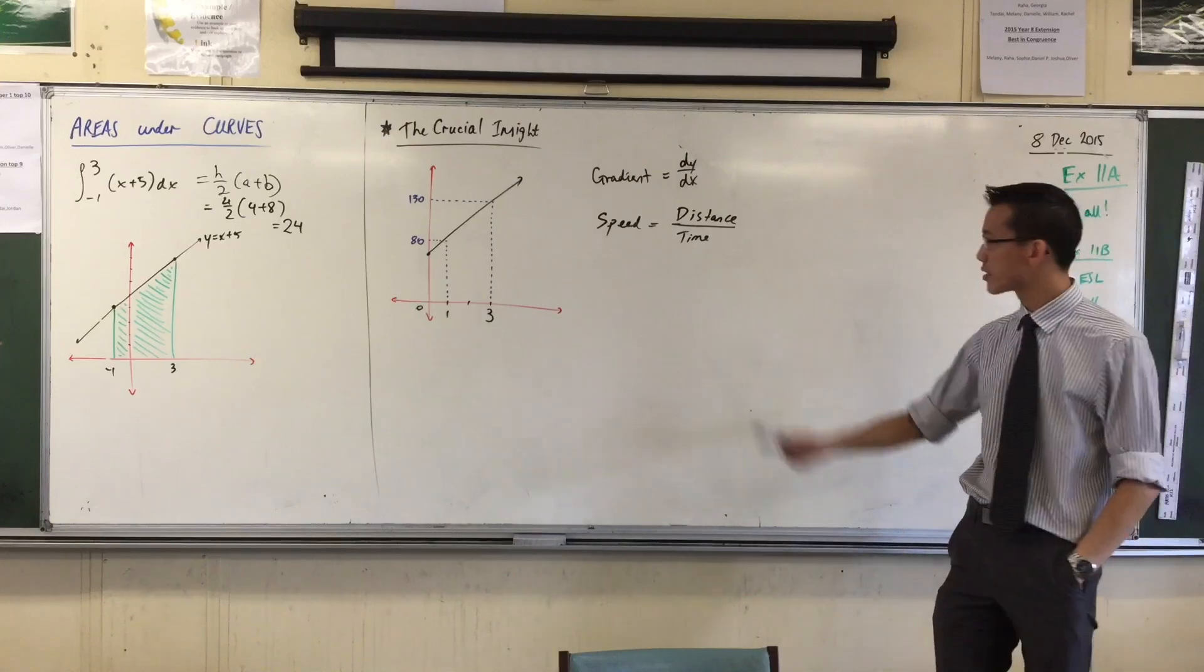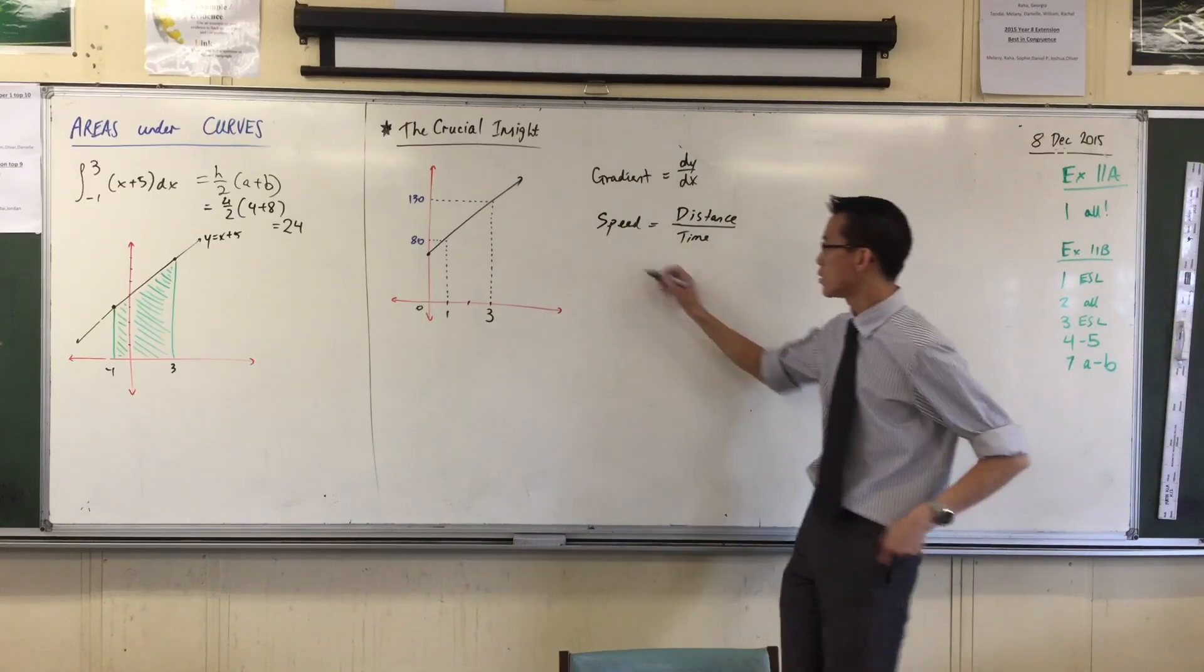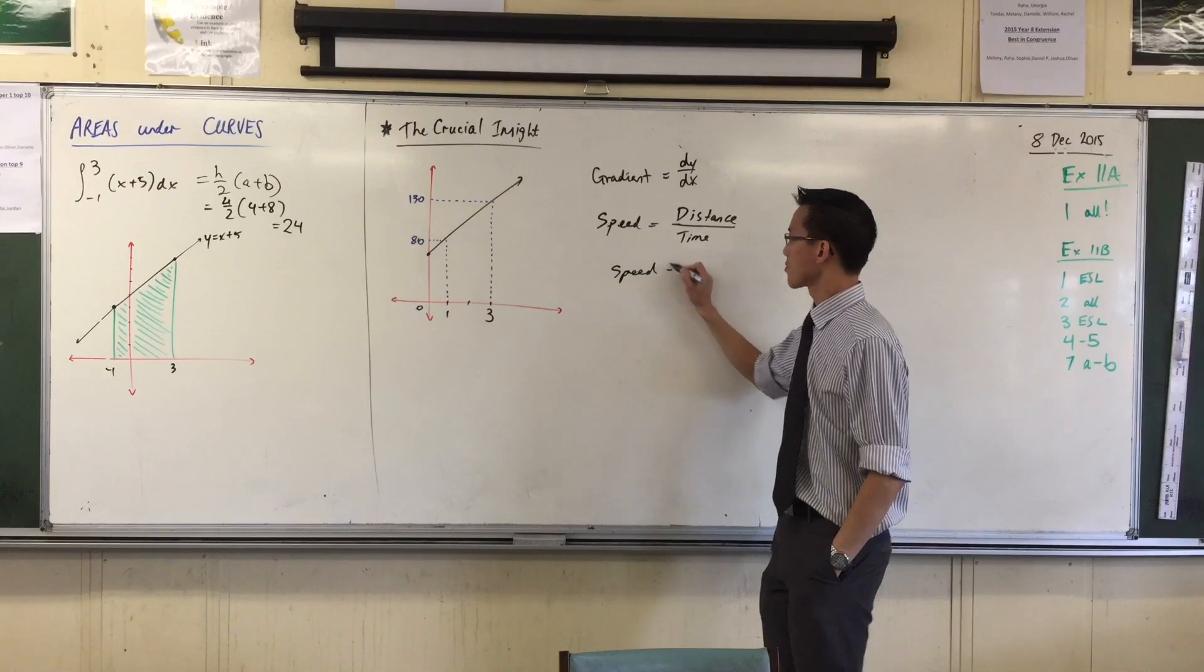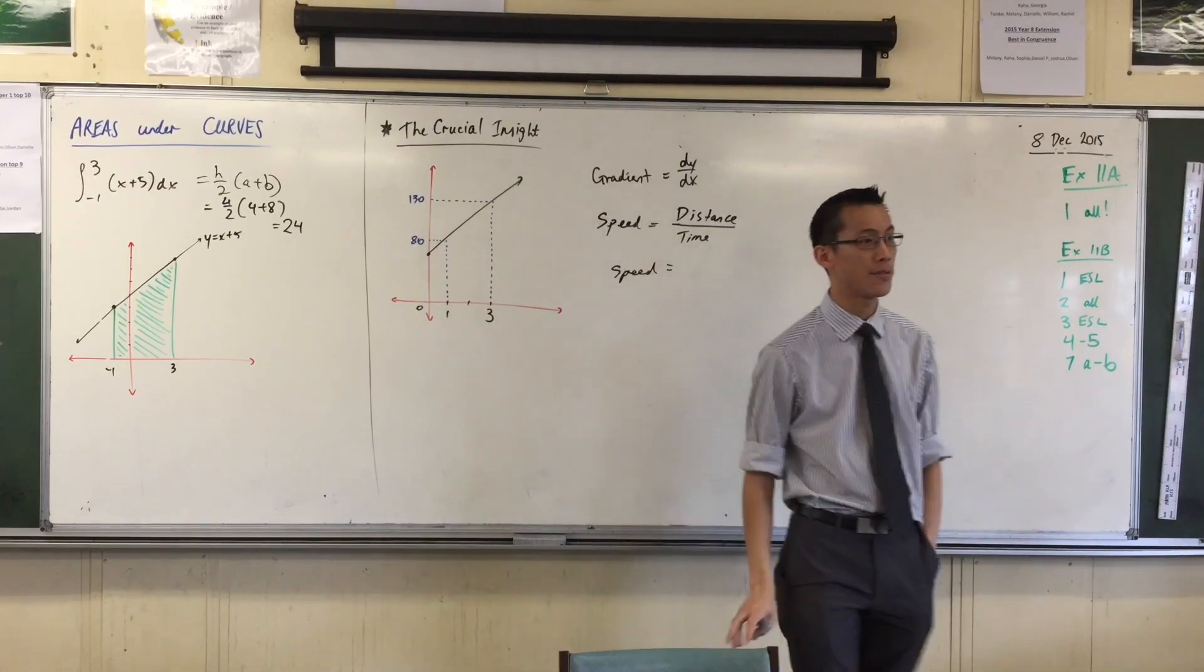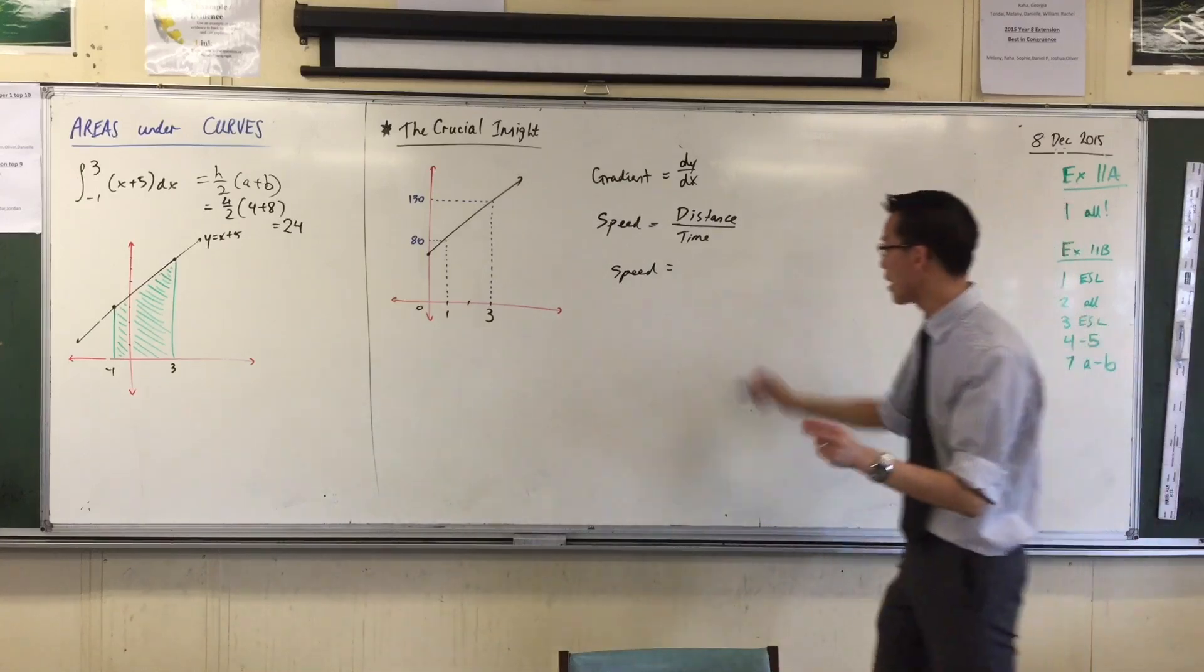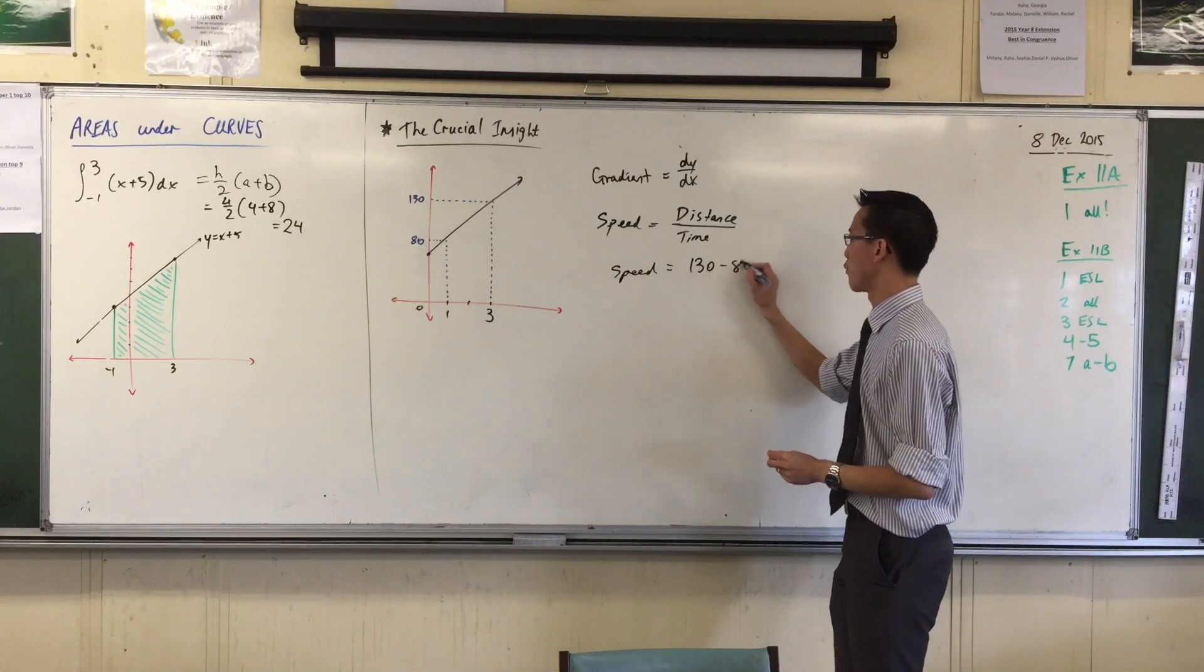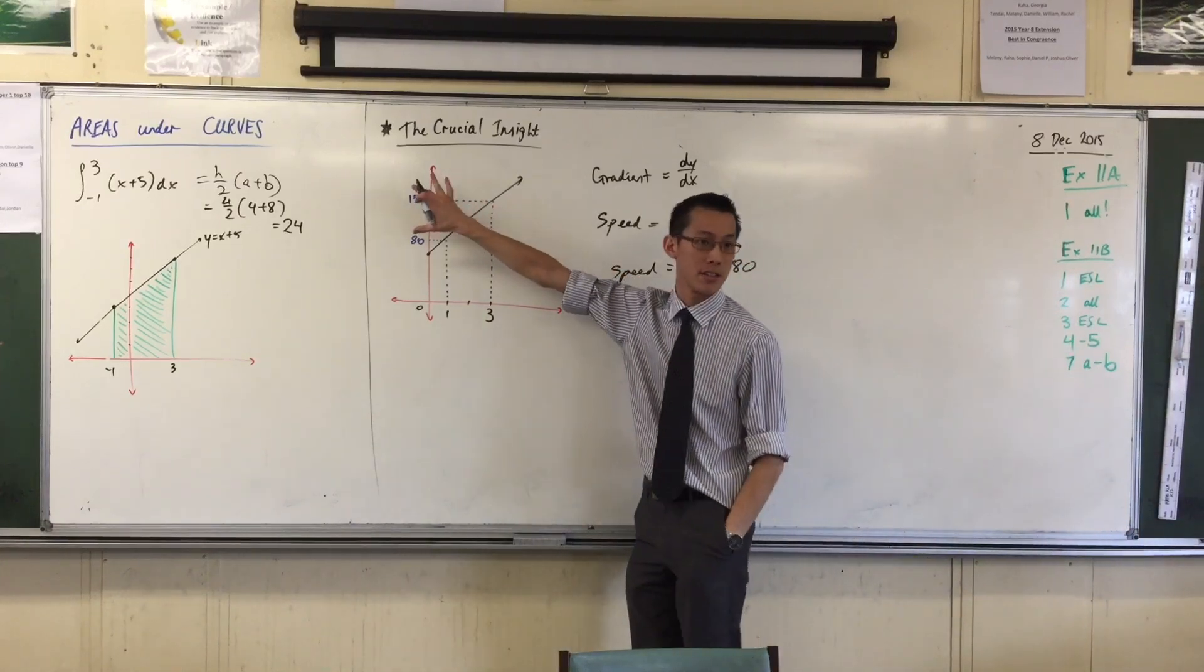Now, how would I work out the speed of this object? It's a constant speed. I would say that the speed is, well, between the first hour and the third hour, how far has it traveled? 50. And it's up 50. Now, very importantly, I'm going to write down that the 50 doesn't just come from 50. It comes from 130 take away 80. It comes from that difference there, right?